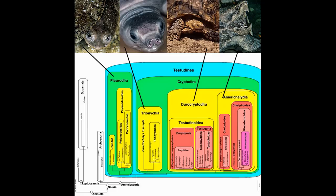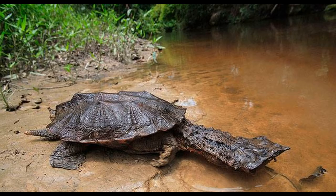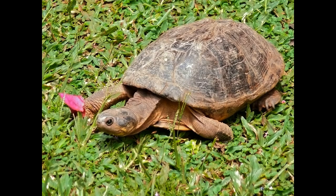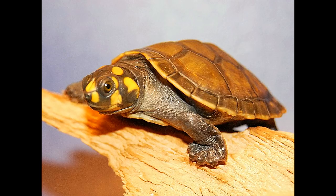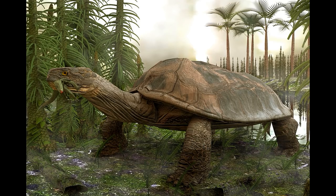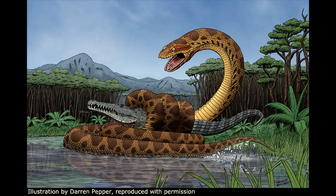Now, there are a number of families within Pleurodira, including Chelidae, Pelomedusidae, and Podocnemididae. The first contains Austro-South American species such as the Matamata and includes members capable of cloacal breathing. The second contains a single species, Pelomedusa subrufa, the African helmeted turtle. The last family, Podocnemididae, contains a number of turtles from South America and Madagascar, such as the yellow-spotted river turtle. One notable extinct member of this family is Carbonemys, one of the largest freshwater turtles that ever lived. It lived alongside the gigantic boid Titanoboa during a warming period that led to the Paleocene-Eocene Thermal Maximum 55 million years ago, as we saw in the previous video on paleoclimatology.